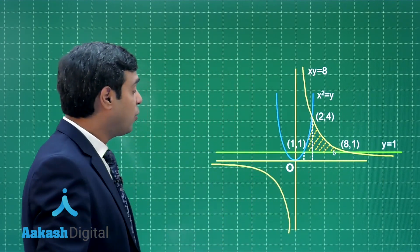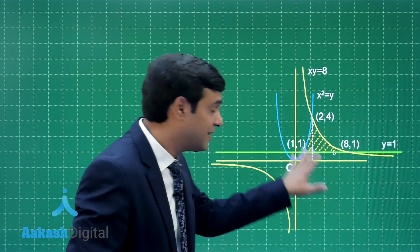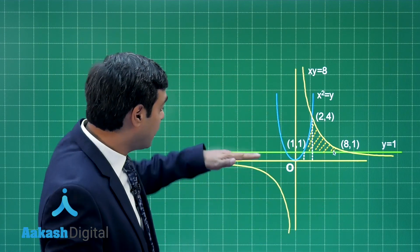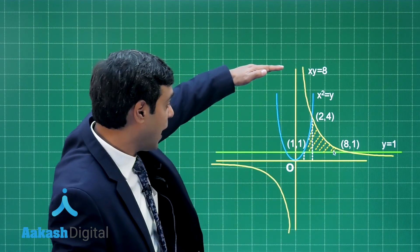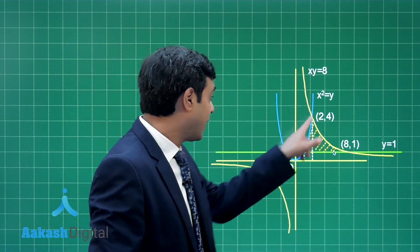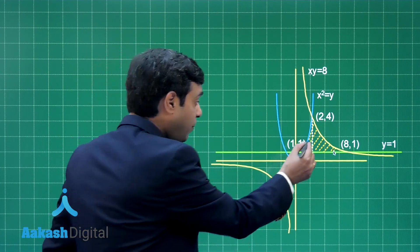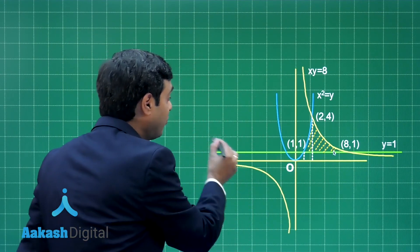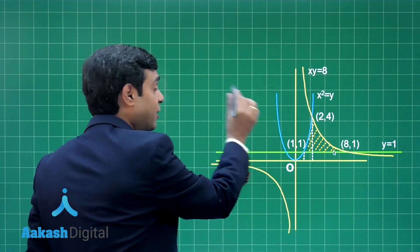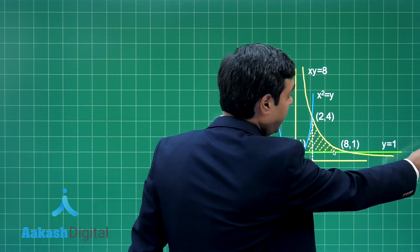Correct. Otherwise, if we talk about xy less than equal to 8, obviously this portion is there. y greater than equal to 1, obviously the portion above the line is here. And when you talk about x square greater than y, so obviously exterior of this parabola is there. So, one portion as I shaded and the other one would be on this side, the second quadrant. But let us go for the bounded one as the option is matching with the bounded.